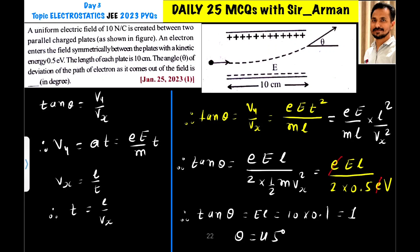A uniform electric field of 10 Newton per Coulomb is created between two parallel charged plates as shown in figure. An electron enters the field symmetrically between the plates with a kinetic energy 0.5 electron volt. The length of each plate is 10 centimeters.